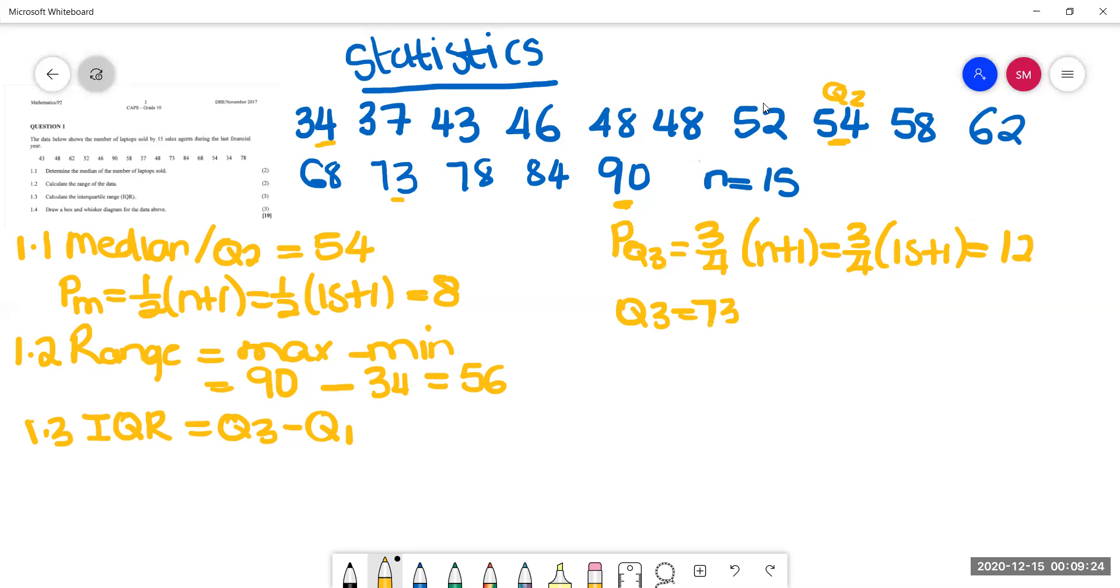So here we can write 73 minus position of Q1 is at the quarter of the data set. And that is a quarter times 15 plus 1 gives us 4. So at position 4 we have 1, 2, 3, 4, we have 46. If we subtract 46 from 73, we get 27.